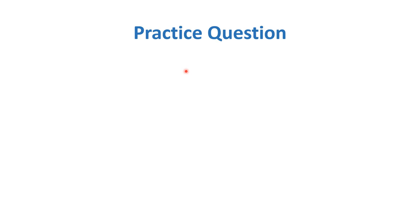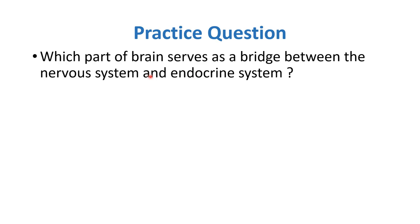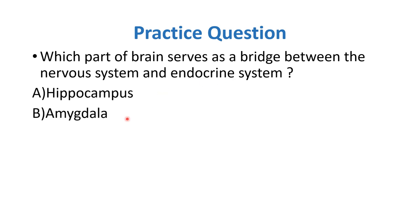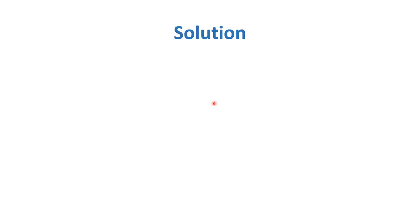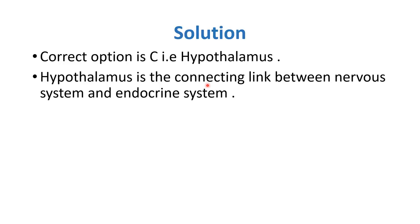Practice question: Which part of the brain serves as a bridge between the nervous system and the endocrine system? Option A: hippocampus, B: amygdala, C: hypothalamus, D: cerebrum. The correct answer is C — hypothalamus. The hypothalamus is the connecting link between the nervous system and the endocrine system. I hope today's lecture was clear. Thank you very much.